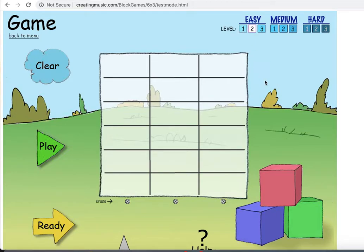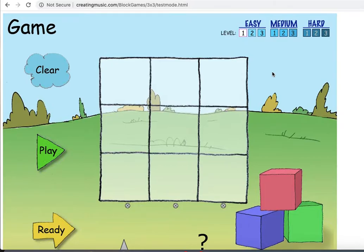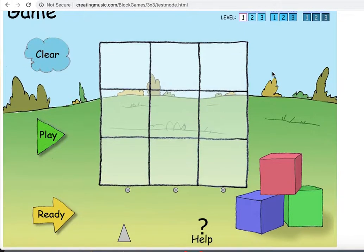Again, click and hear the instructions. Create a three-note melody by clicking on one of the squares in each column. Then, listen to the melody by clicking the play button. When you think you can remember it, click on the yellow ready button. Okay, so it'll tell you some instructions.